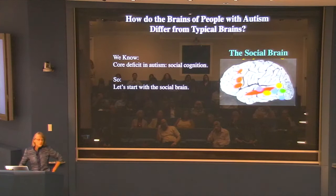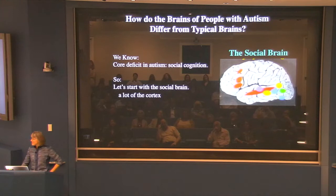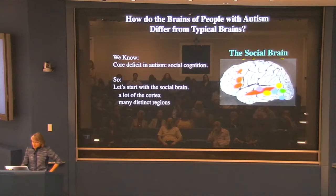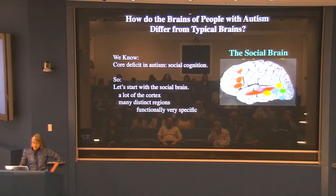What is a social brain? Here's a cartoon picture of a brain with a bunch of regions that have been implicated in different aspects of social function. The first thing you notice is it's a lot of the cortex — a large area of the brain is involved in carrying out different kinds of social functions. And it's not all homogeneous; there are different bits, many of which are functionally very specific.